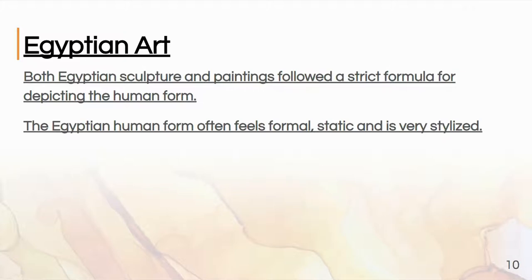That's all we're covering for prehistoric — we have to move quickly. Now we're going to talk about Egyptian art. Egyptian art follows a very strict formula for both paintings and sculpture. It feels very stiff and very static.